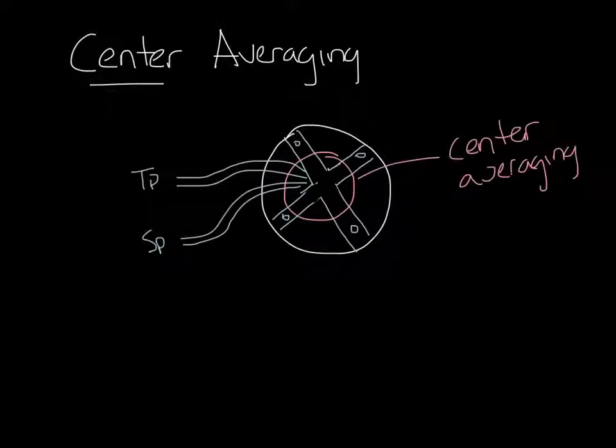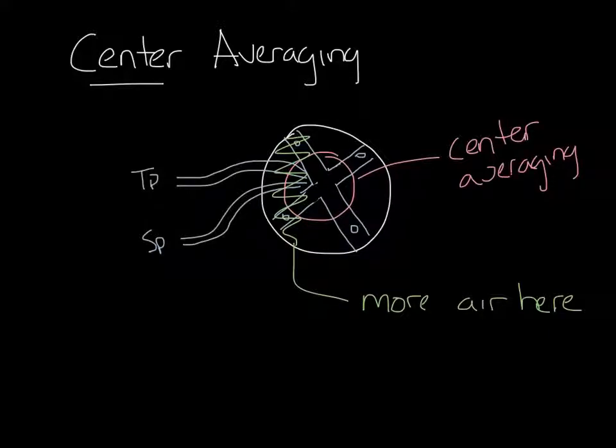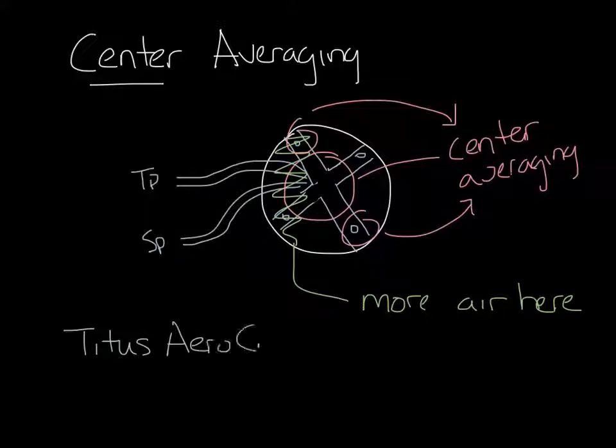Now if there are poor inlet conditions and the air piles up on the left side of the inlet like it did in the last one in this green area, the readings from the hole on the left, which is reading high, and the hole on the right, which is reading low, are going to be averaged in the center of the flow sensor and give a more accurate signal to the controller. This means that VAV boxes with center averaging flow sensors like the Titus AeroCross are not affected by poor inlet conditions as much as linear averaging sensors are.